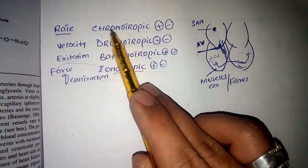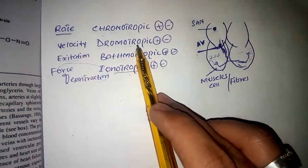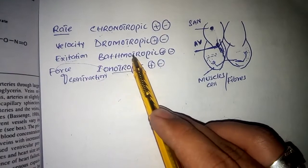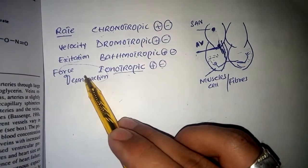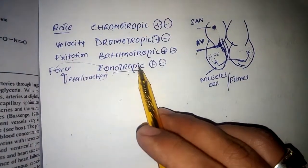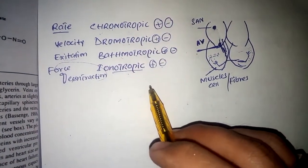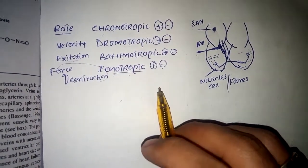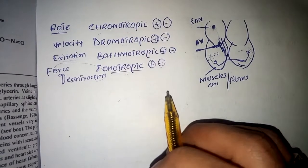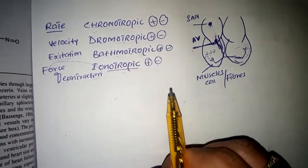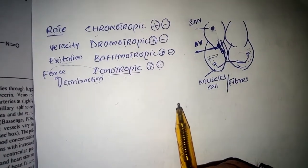To summarize: heart rate is the chronotropic effect, velocity of conduction is the dromotropic effect, excitation is the bathmotropic effect, and force of contraction is the inotropic effect. If you have any questions regarding this topic, you can drop them in the comment box and we will come back with answers very soon. Thank you.